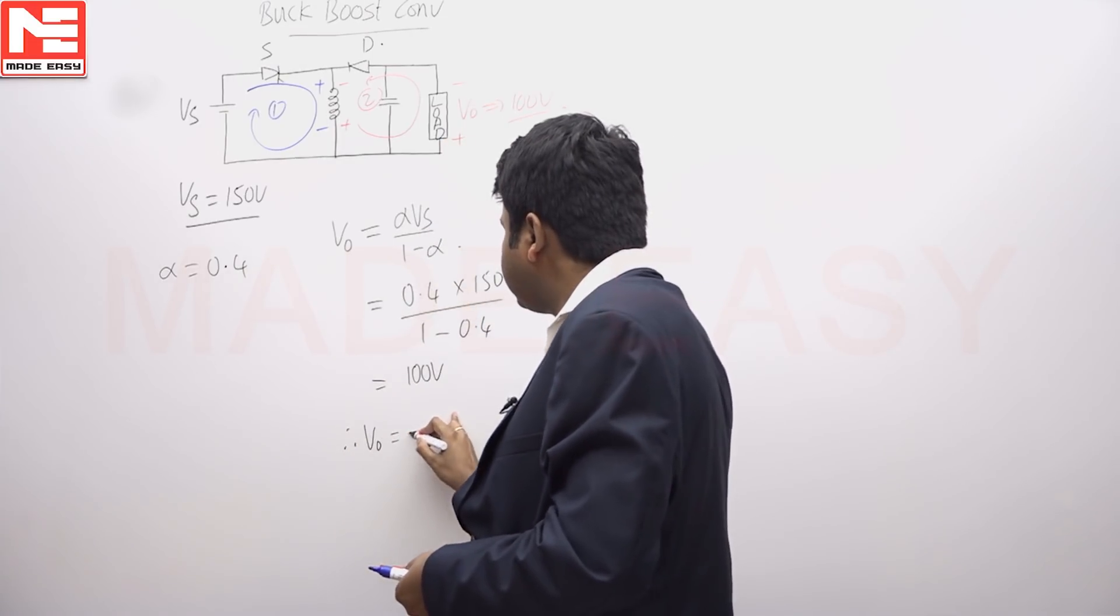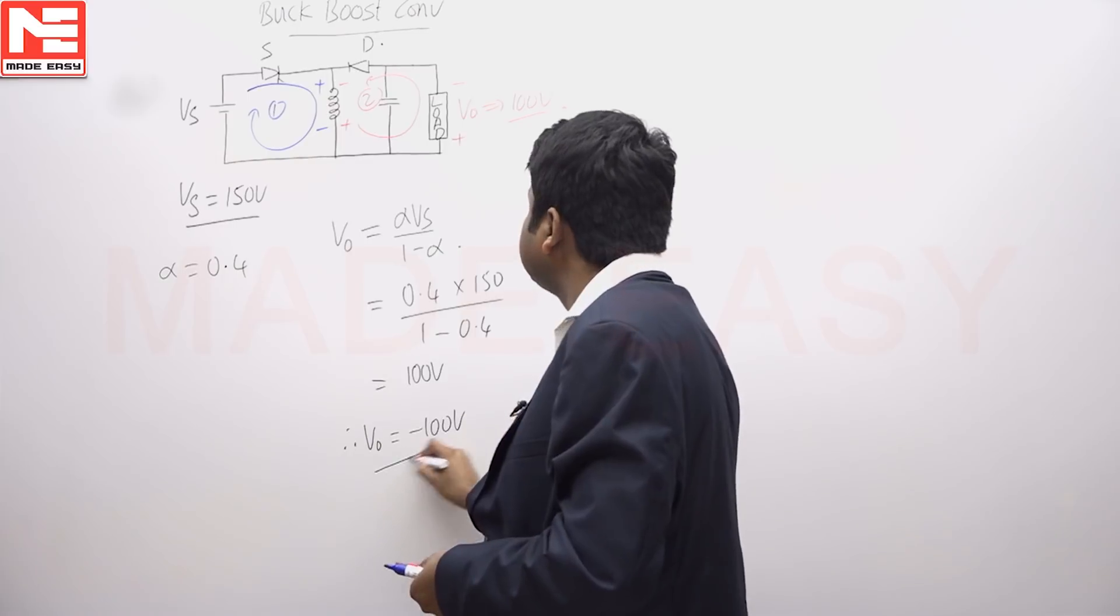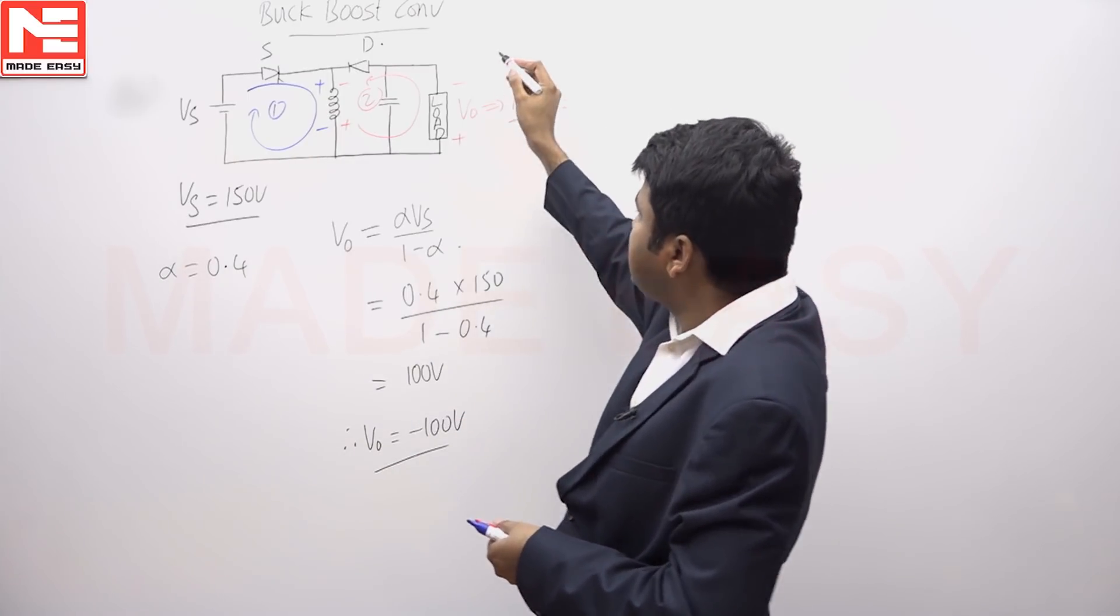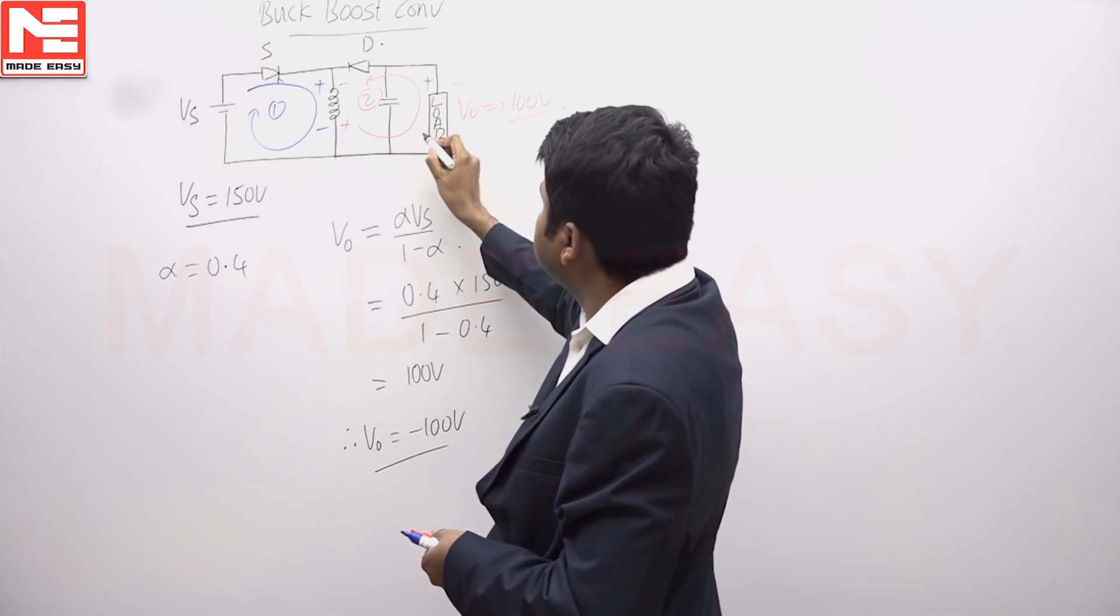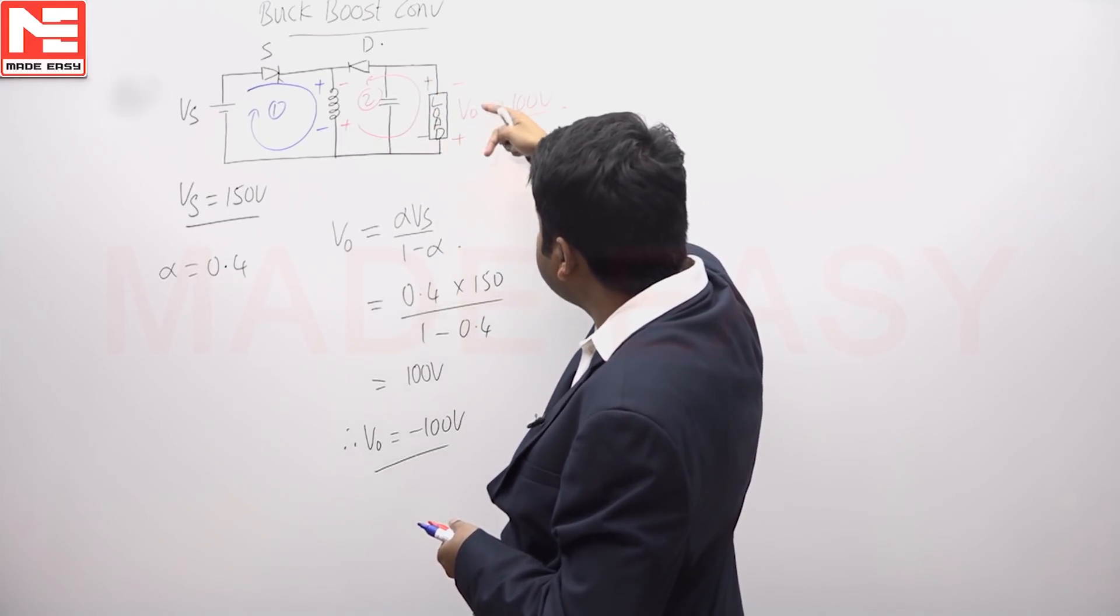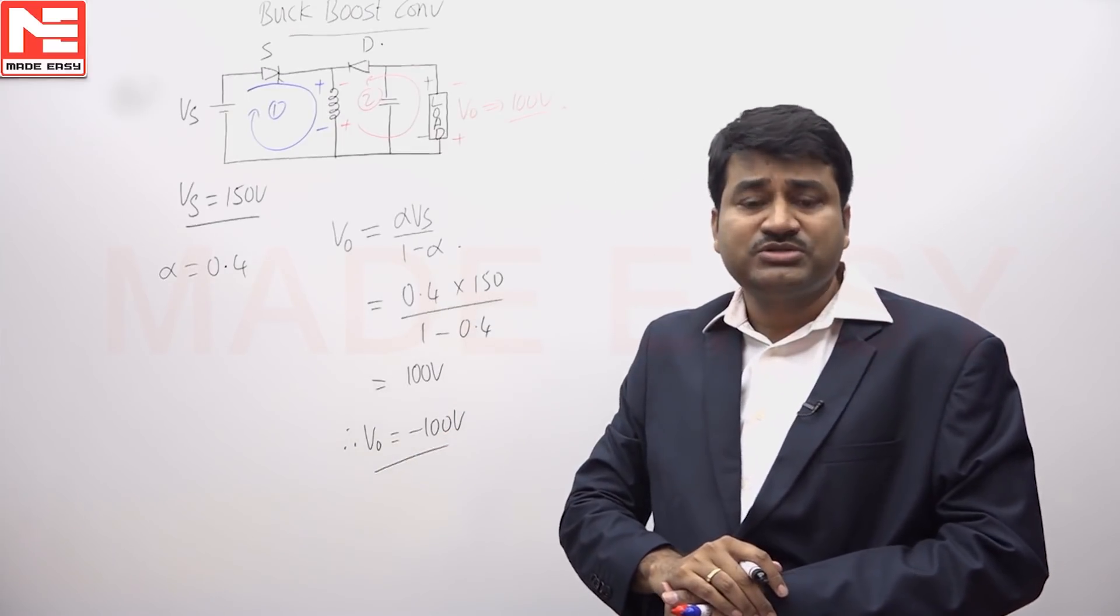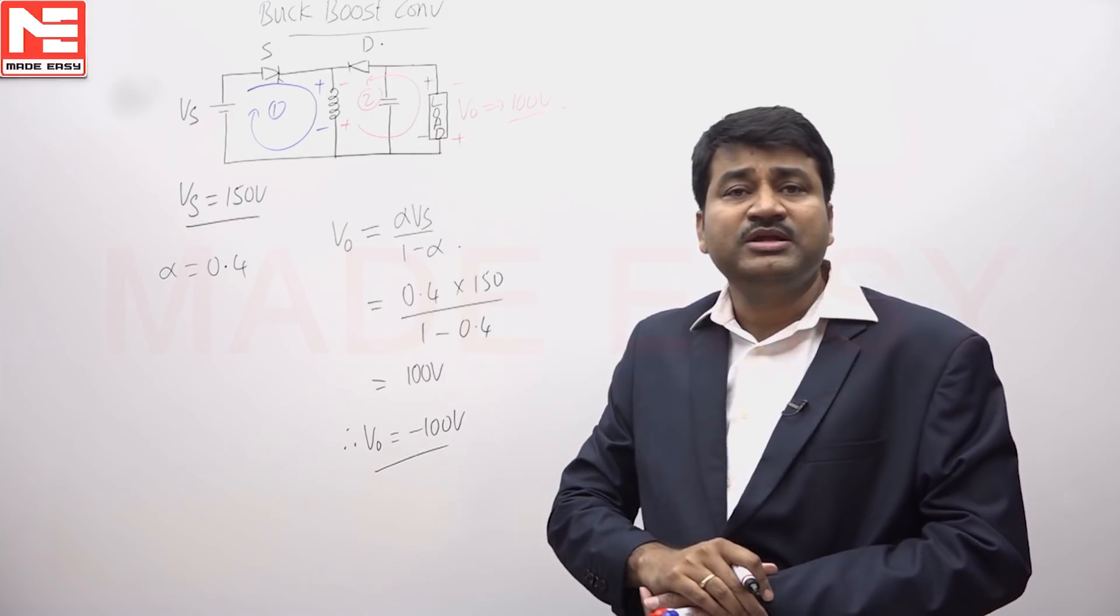We can say output voltage is minus 100 volts because this is the reference indicated in the network - according to reference, actual is opposite to reference. You can say output voltage is minus 100 volts. Answer is option B.